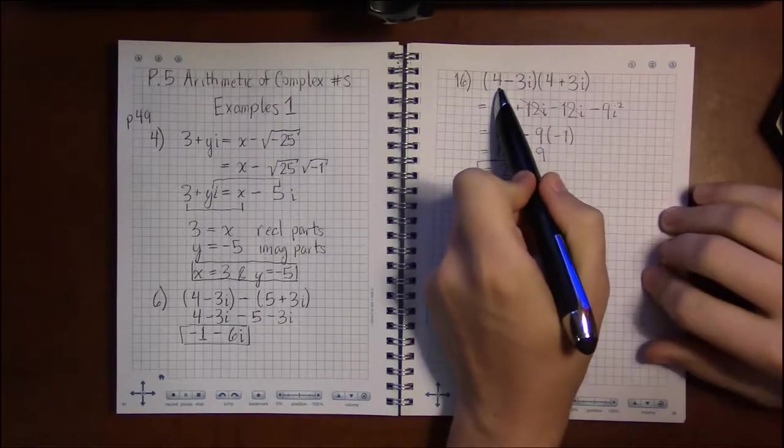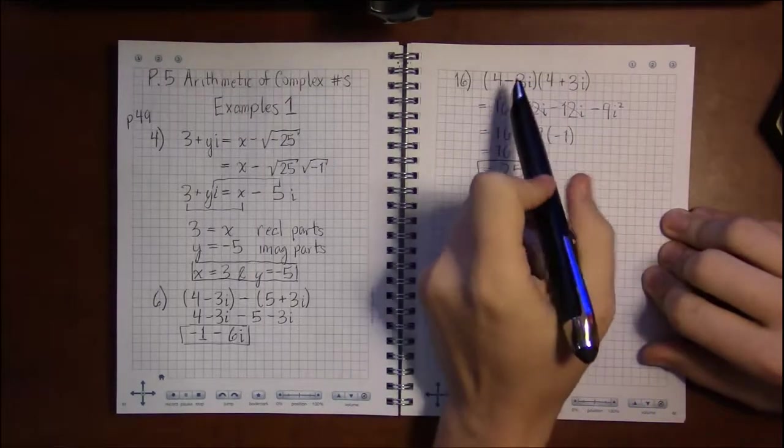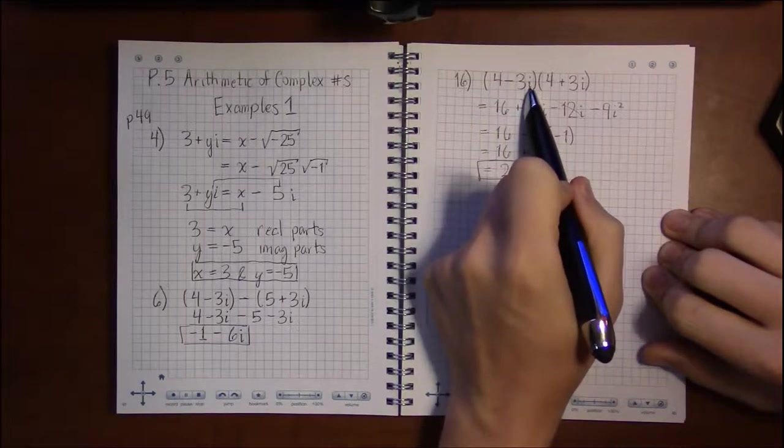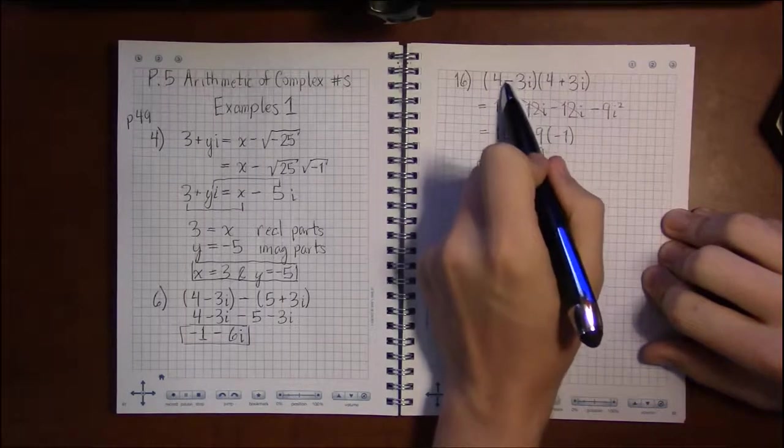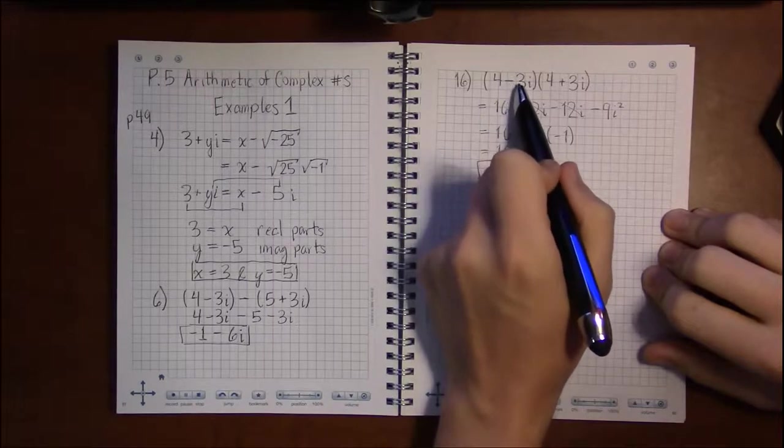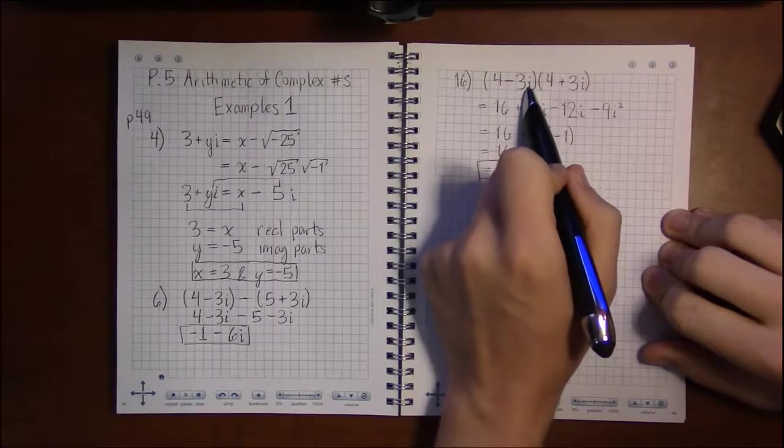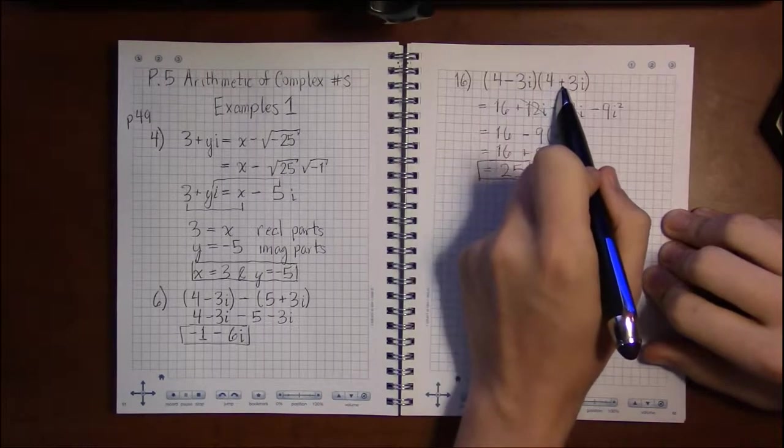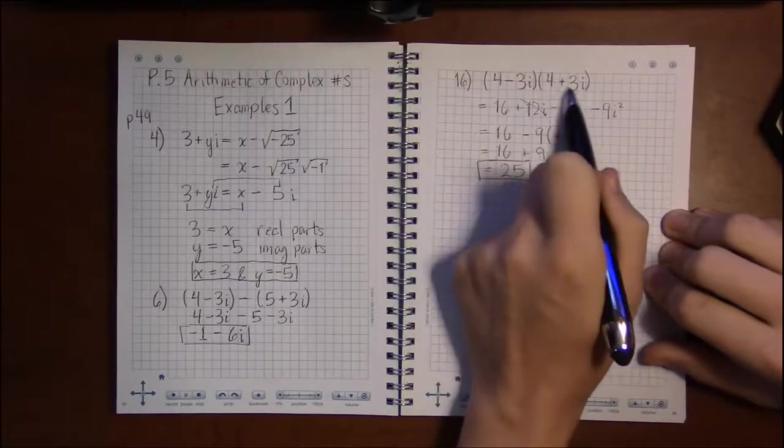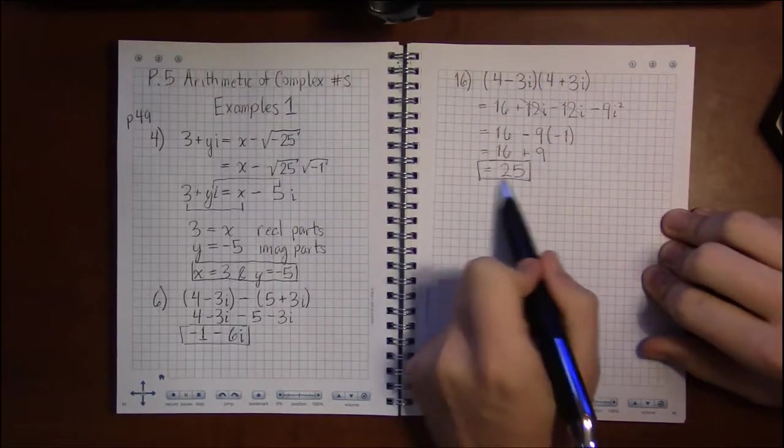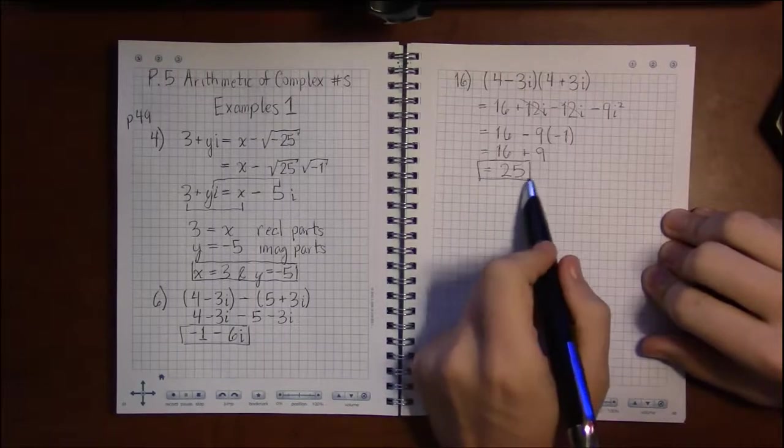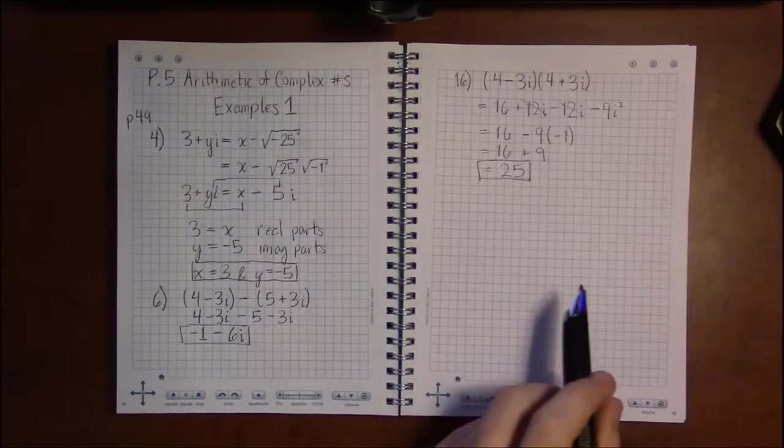And I knew that because these two things are conjugate. The conjugate of 4 minus 3i is just change the sign of the i term, change this negative to a positive. And when you multiply two conjugates together, you will get a real number back, a number without i's in it. And that's how I saw that.